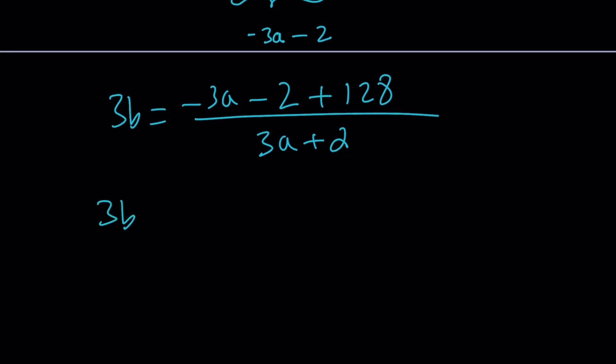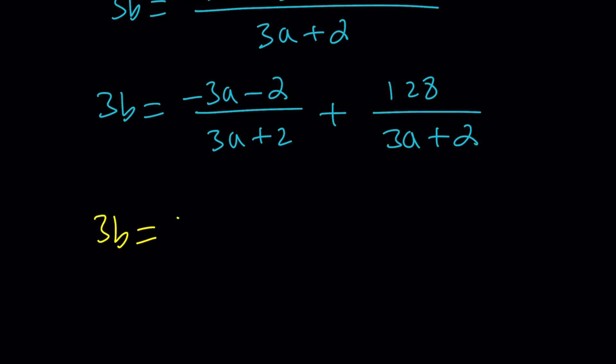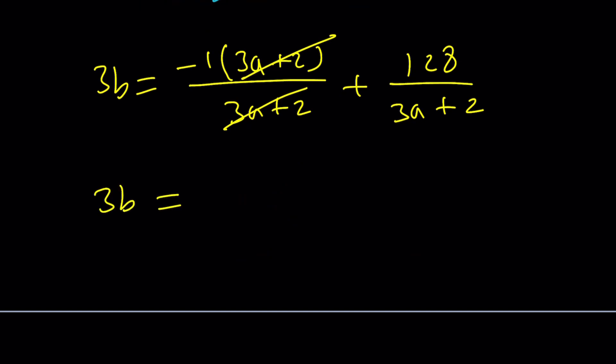Let's write this negative 3A plus 126 as negative 3A minus 2, but we have 126. To make up for that, let's just add 128. Now divide that whole thing by 3A plus 2. We can separate it: 3B equals negative 3A minus 2 divided by 3A plus 2 plus 128 divided by 3A plus 2. This is really cool because first of all, this is divisible by the denominator. Second, we have a remainder. Write the negative 3A minus 2 as negative 1 times 3A plus 2, and then we can cancel out the 3A plus 2 and come up with negative 1.